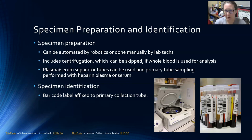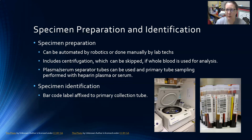Or it can be done manually by the lab techs or somebody working in central processing, where they're receiving specimens, centrifugating them, and then putting them in racks and carrying them to the chemistry department and handing them off to the chemistry tech. This does include centrifugation, which can be skipped if whole blood is used for analysis.